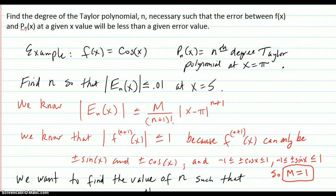So here's our example. We want to find something about f of x equals cosine of x and let p sub n be the nth degree Taylor polynomial at x equals pi. So find n so that the error will be less than 0.01 at x equals 5.